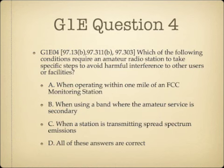Question 4. Which of the following conditions require an amateur radio station to take specific steps to avoid harmful interference to other users or facilities? A, when operating within one mile of an FCC monitoring station; B, when using a band where the amateur service is secondary; C, when a station is transmitting spread spectrum emissions; or D, all of these answers are correct.